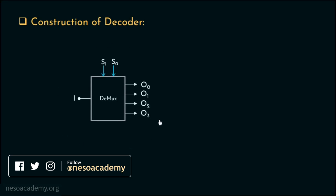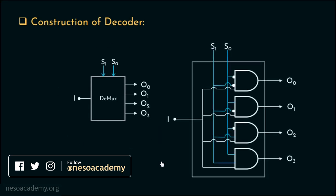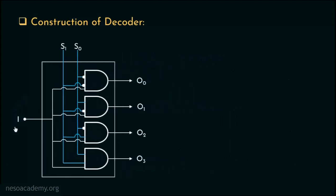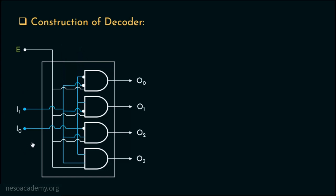If you all remember, during the construction of a decoder, we first took the demultiplexer, also known as the data distributor, because in this combinational circuit, based on the select lines, the input can be propagated to any one of the output lines. During the session on Introduction to Primary Memory, we changed the input line of this circuit into an enable line. And finally, when we convert these select lines into input lines, the circuit becomes a decoder circuit.